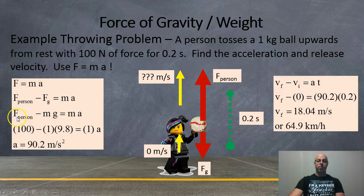We're going to get 100 newtons, subtract 1 for the mass, 9.8 for G, equals 1 for the mass, A for acceleration. And when we solve it, we get an acceleration of 90.2 meters per second squared.